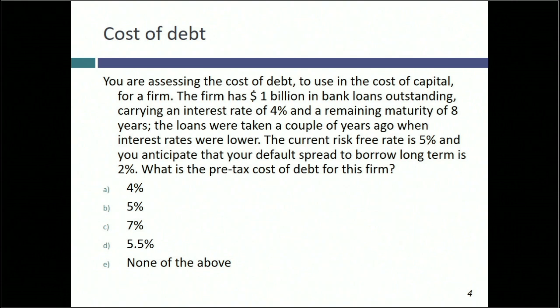The second choice is to use just the risk-free rate of 5% because you feel uncomfortable using a number lower than that. The third is to use the rate at which you can borrow money long-term today, which is 7%. Some people feel an urge to average 7 and 4 to get 5.5%, but sometimes the best use for information is to not use it. The right answer is 7% — not 4%, not 5.5% — and this will make a big difference in your cost of capital.